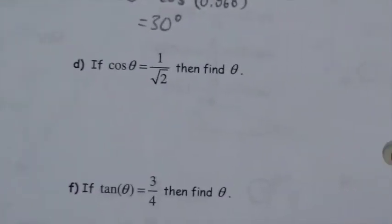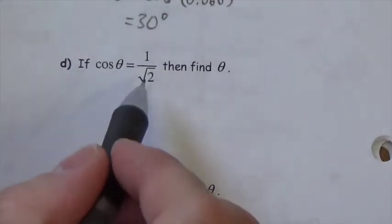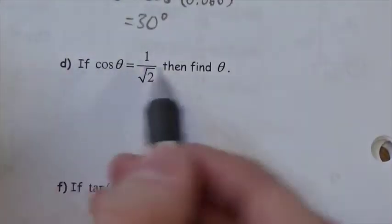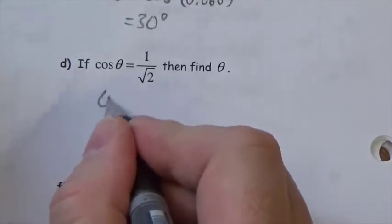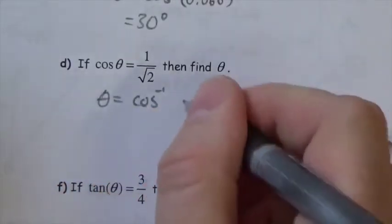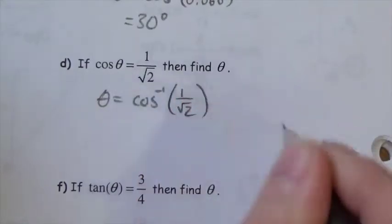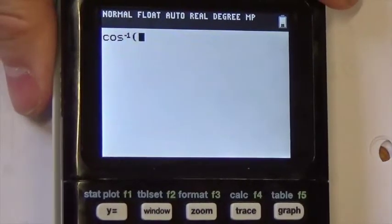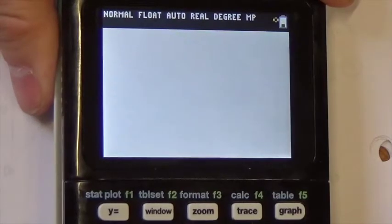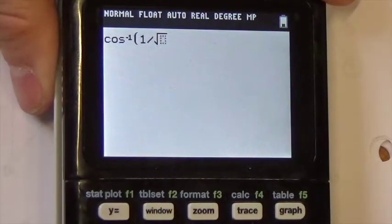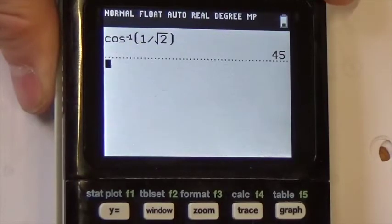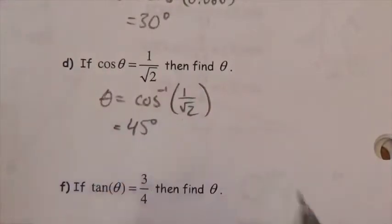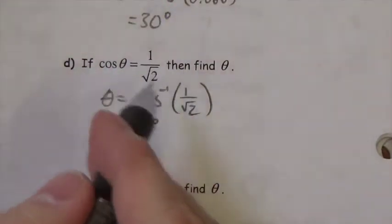The cosine of an angle is equal to 1 over root 2. If I knew what that angle was, I'd plug that in and get 1 over root 2. But I don't know the angle. So to get it, I use the second function cosine — inverse cosine — of 1 over root 2. So second function, cosine, 1 divided by the square root of 2. And you get exactly 45 degrees. That's an interesting one to know — you're going to see it play an important role in later courses.